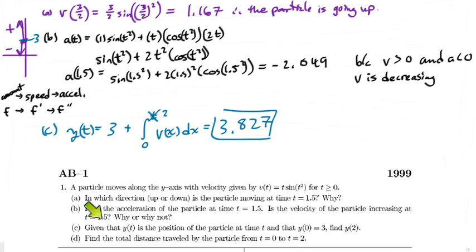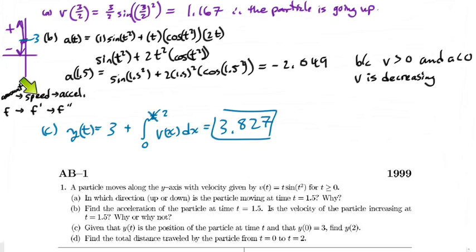The last question says: find the total distance traveled by the particle from t = 0 to t = 2. As soon as you see total distance, an alarm should go off in your head. Let me give an example to explain why.